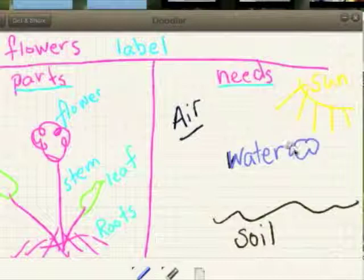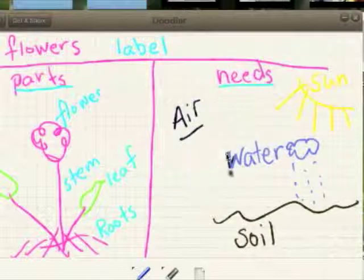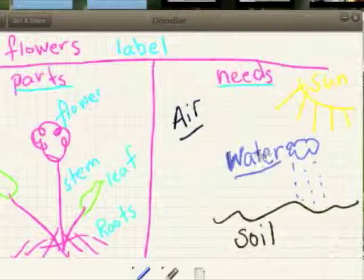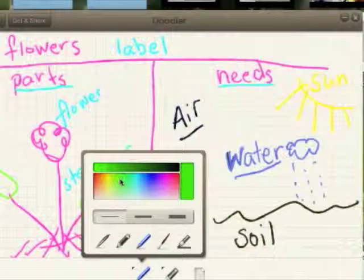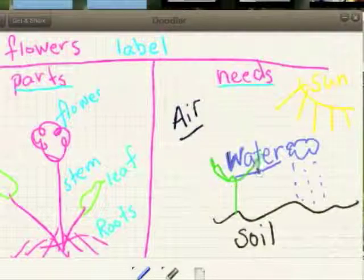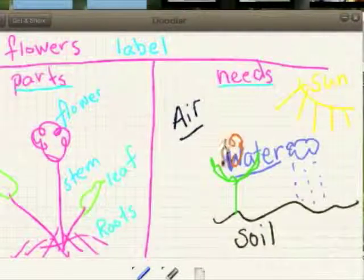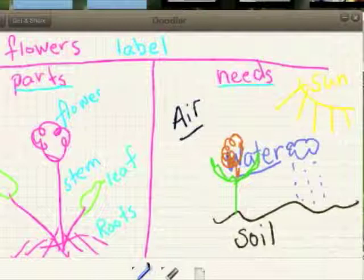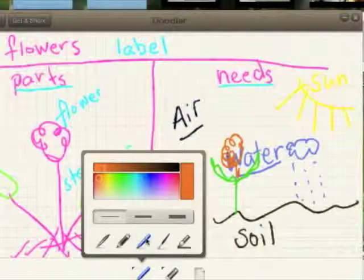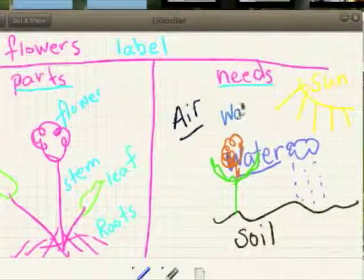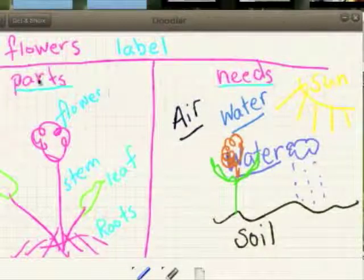And in nature, that would be a little rain. And if you're not in nature, it wouldn't be that. But these are the needs of a flower. Air, sun, water, and soil. And if you have all of that, then guess what? You can have a flower. And what color is flower? How about red? Orange. Because the flower will grow. Now I need to write water again. That's what makes the flower grow. Air, water, sun, and soil make the flower grow. And these are the parts of a plant. Yay!